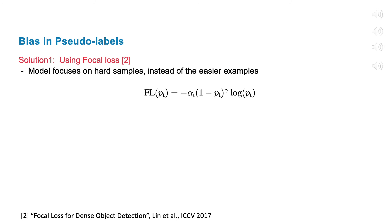Our Unbiased Teacher applies two techniques to address the pseudo-label bias issue. First, when we train the ROI head, we replace the cross-entropy with the focal loss, which puts more weight on the low confidence instances. Therefore, it makes the model focus on the hardest samples, which are least likely from the dominant classes.